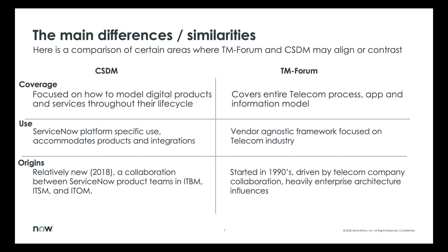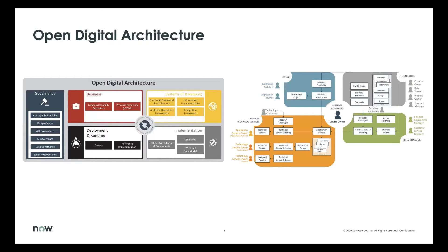It's very heavily enterprise architecture influenced, as you'll see when we go through the framework. There are a couple of different viewpoints within TM Forum. The first is the Open Digital Architecture, and for the most part this has things that we don't directly cover in CSDM. However, there is a business correlation with business capabilities in the design model for CSDM. The systems, IT, and network area covers all of CSDM in terms of integration framework and functional framework. In CSDM we're not necessarily framework-driven in the sense of supporting application creation at a design level — we're there to support from design down to technical and consumption, but there is some synergy there.